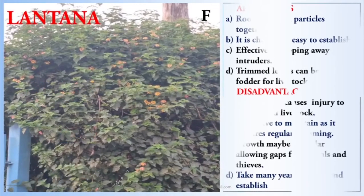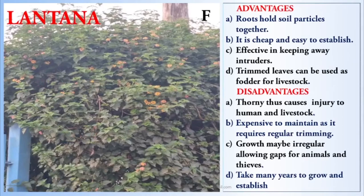Fence F is Lantana. Lantana's roots hold soil particles together. The advantages of Lantana include: the roots hold soil particles together; it is cheap and easy to establish; it is effective in keeping away intruders; and the trimmed leaves can be used as fodder for livestock. Some disadvantages of Lantana: it is a thorn species that causes injury to humans and livestock; it is expensive to maintain as it requires regular trimming; growth may be irregular, allowing gaps for animals and thieves; and it takes many years to grow and establish.